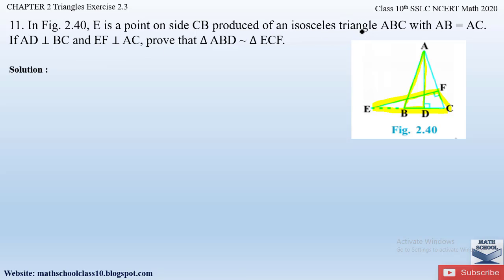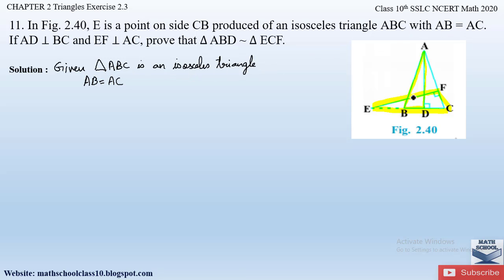Given: triangle ABC is an isosceles triangle with AB equal to AC. In an isosceles triangle two sides are equal, so the side AB is equal to side AC — that is what they have given us.